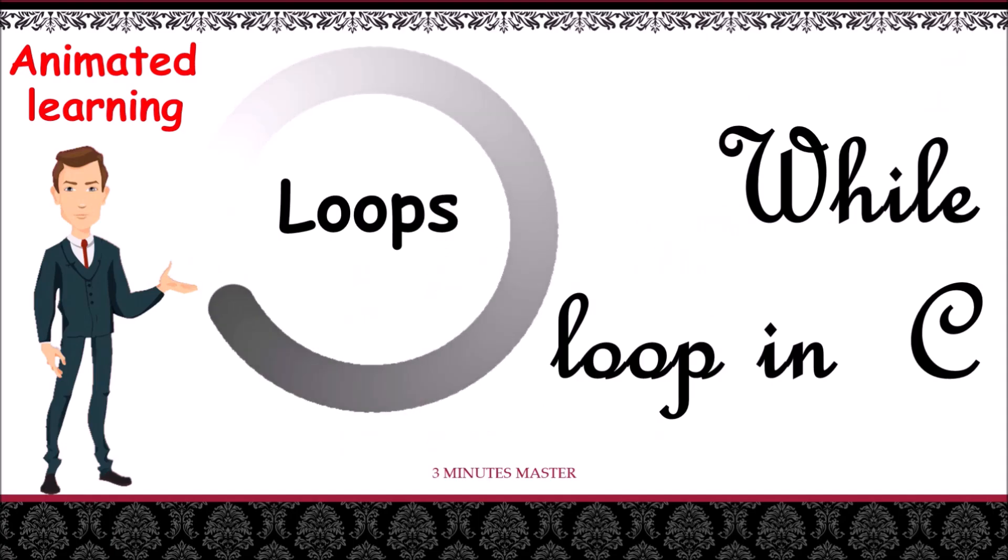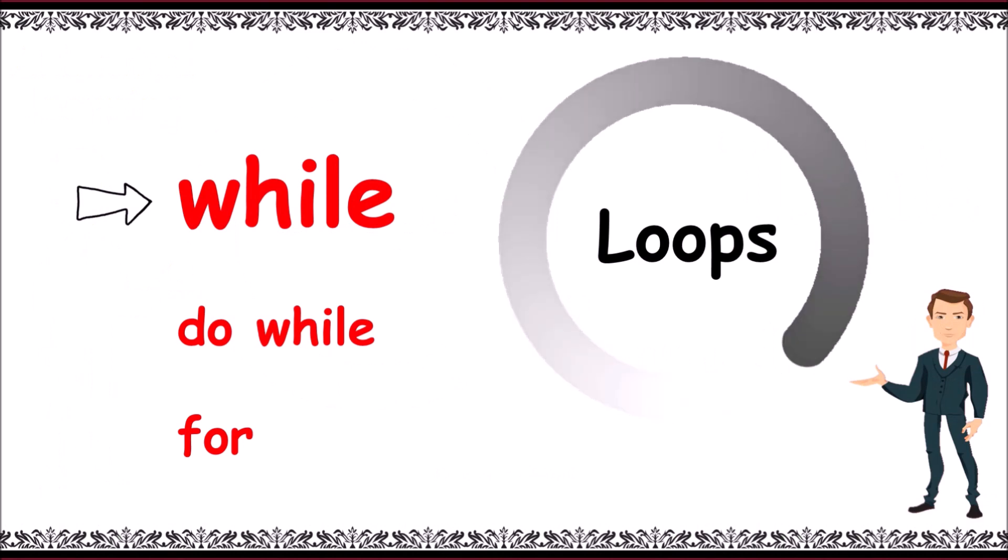Hello guys, welcome to 3mm. Let's start with while loop in C. C programming language provides us with three types of loops: while, do while, and for. Here let's learn regarding while loop. While loop is an entry control loop.